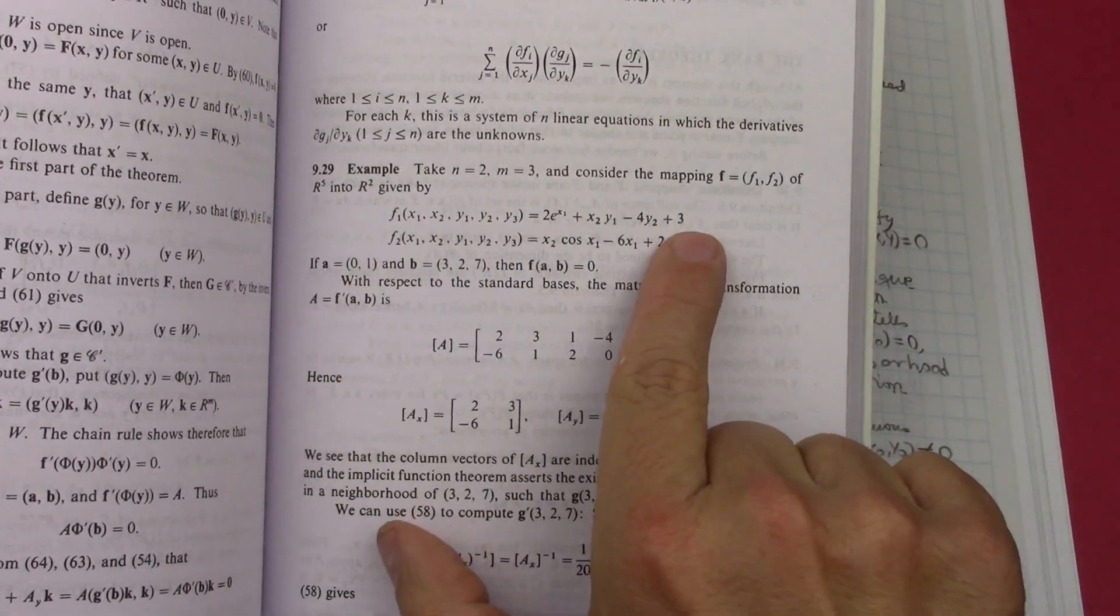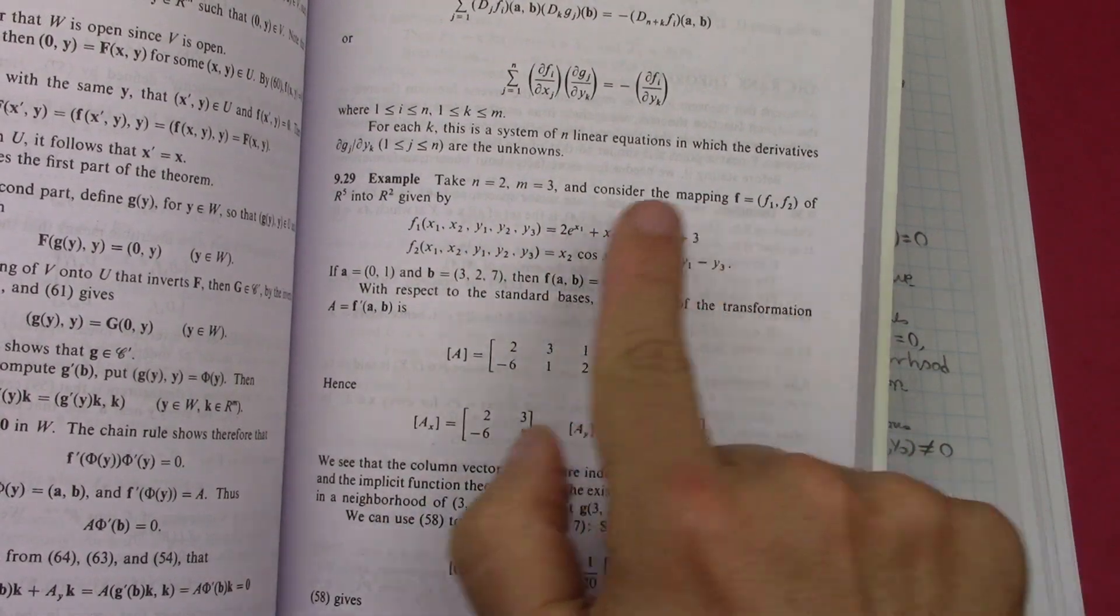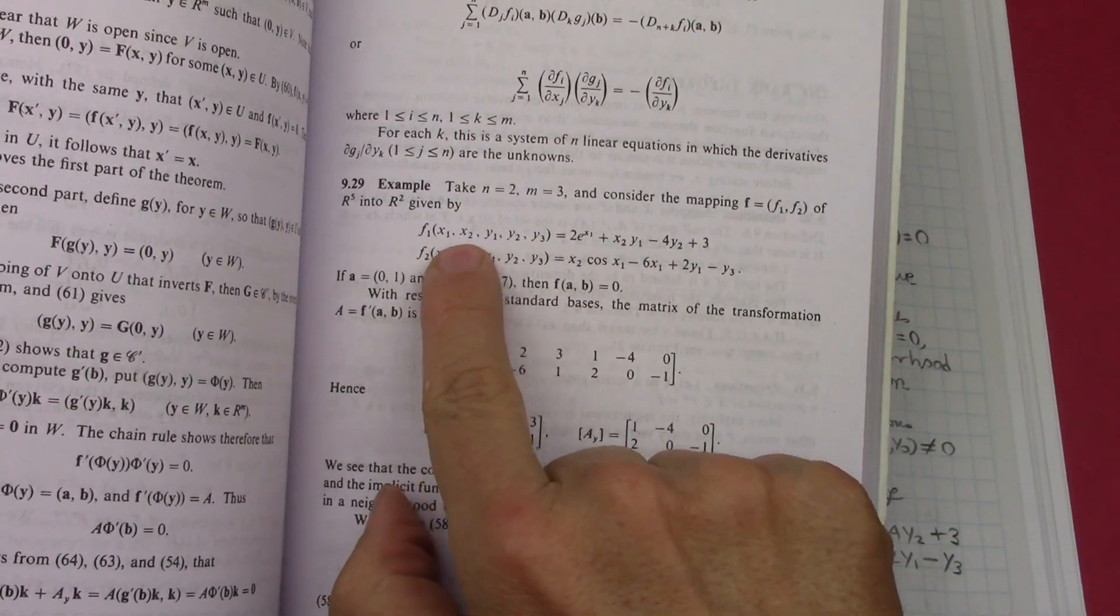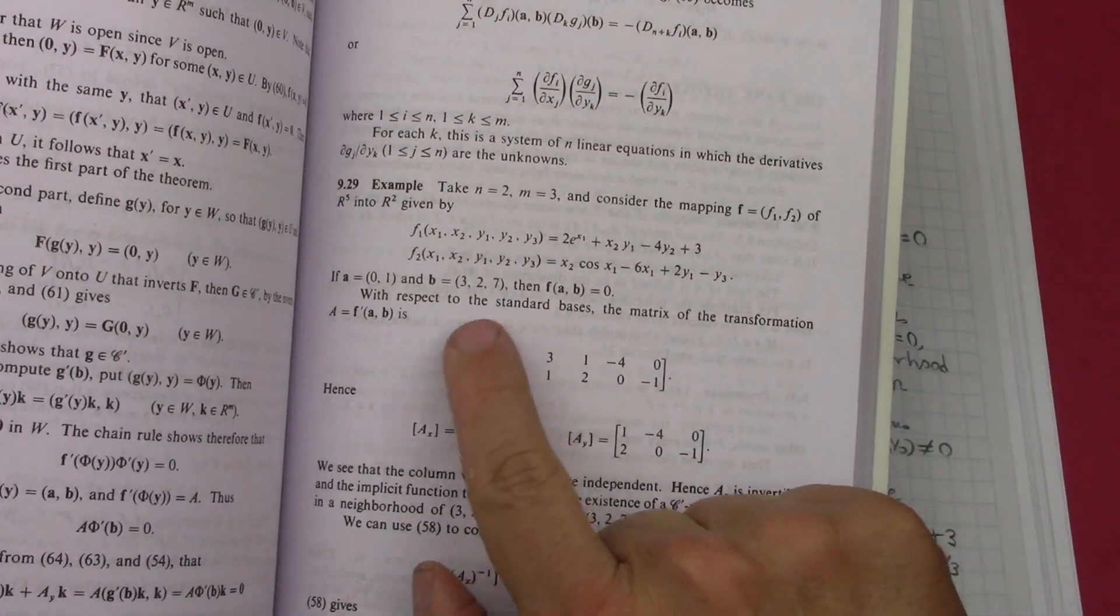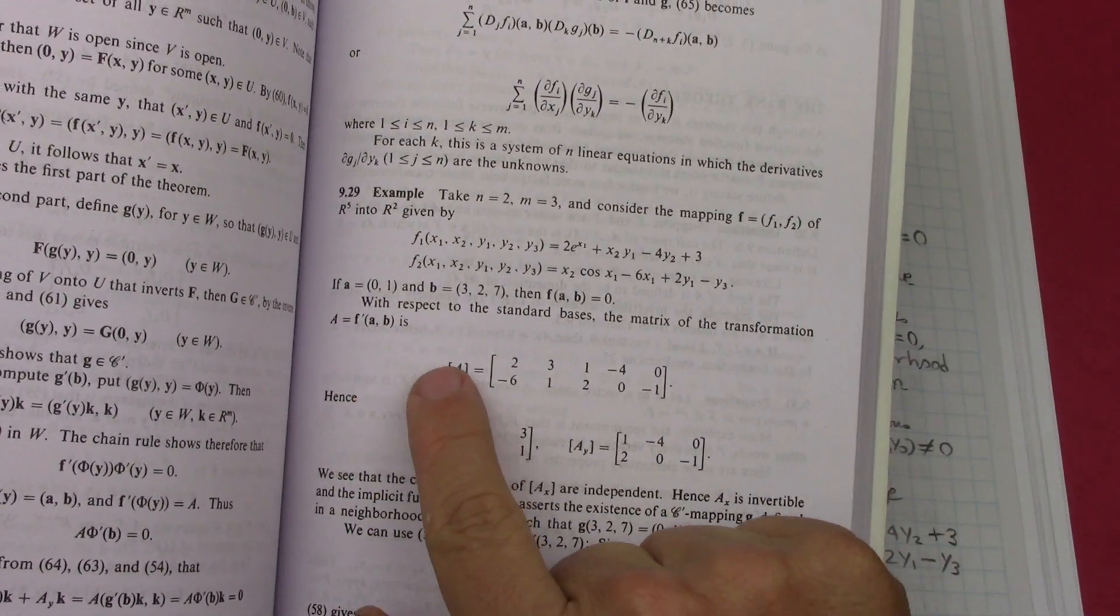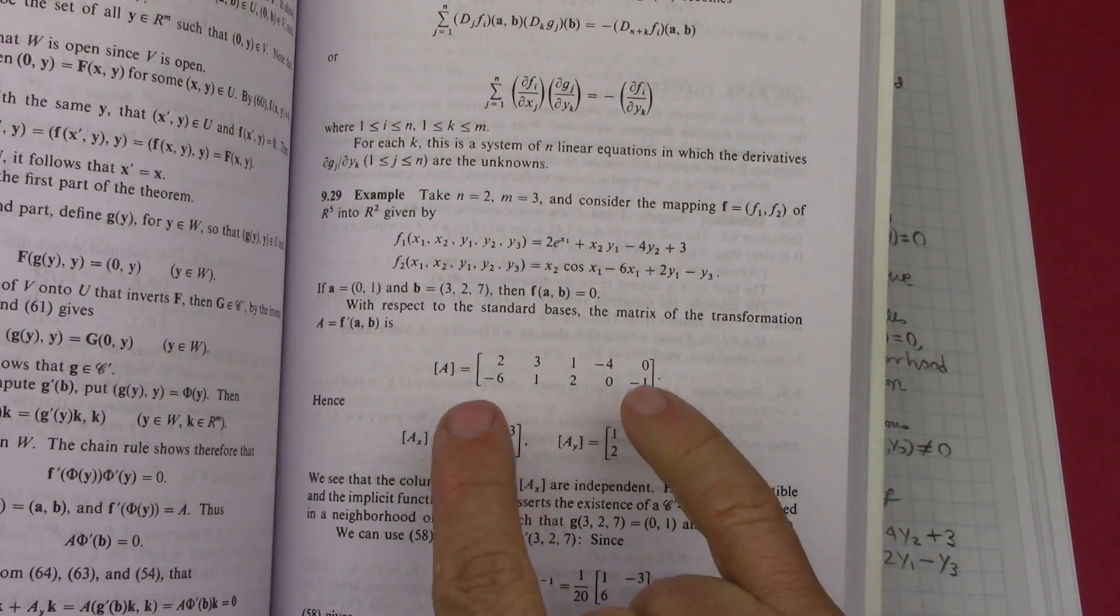He takes two functions, f₁ and f₂, and it's got x₁, x₂, and then y₁, y₂, y₃. These are the functions, and then when you do the Jacobian and you evaluate at a certain point for which the function is true.